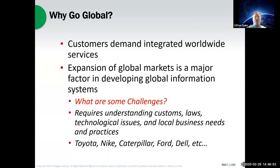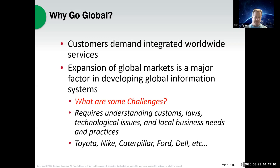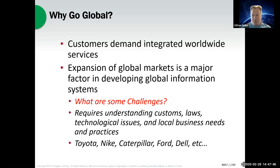So first of all, why go global? Let me ask you a question. Right now, what percentage of the Earth's population do you think lives in the United States? 20%, 30%, 10%? Most people born in America really don't know, but it's about 7%. That means there's 93% of the world living outside of our borders. We have a larger economic impact than 5-7% of the world, but that's about our population.